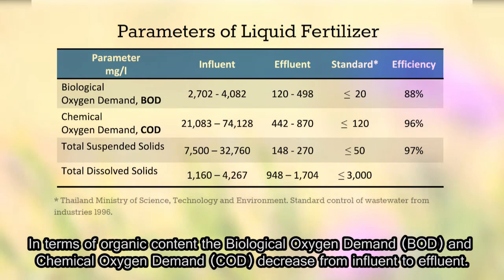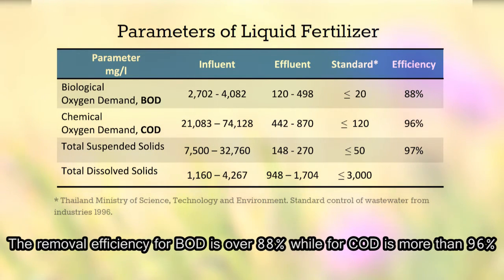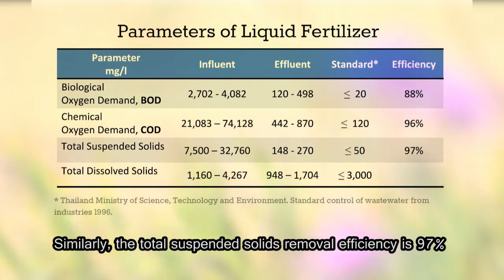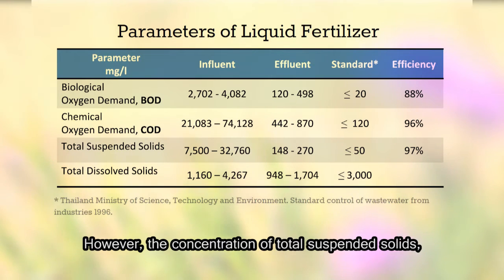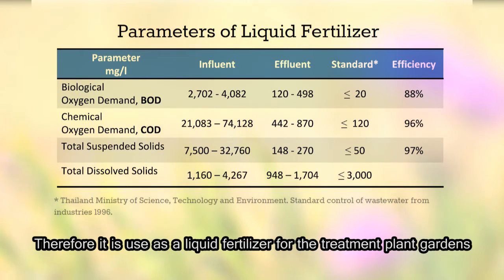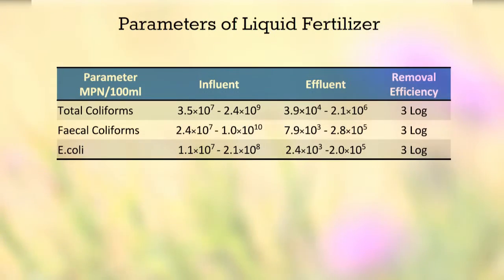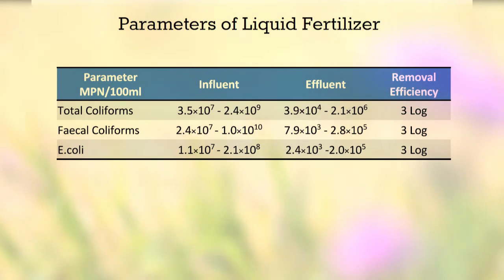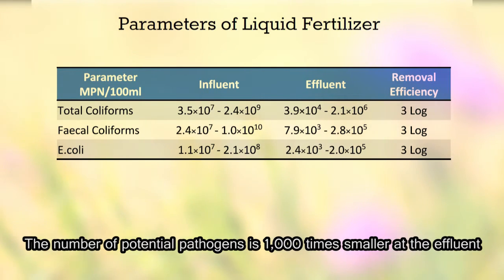In terms of organic content, biological oxygen demand (BOD) and chemical oxygen demand (COD) decrease from influent to effluent. The removal efficiency for BOD is over 88 percent while COD is more than 96 percent. Similarly, total suspended solids removal efficiency is 97 percent. However, concentrations of total suspended solids, BOD, and COD are higher than the permissible limit, not allowing release to channels. Bacteria removal efficiency in the system is about three log for total coliforms, faecal coliforms, and E. coli — the number of potential pathogens is a thousand times smaller at the effluent.